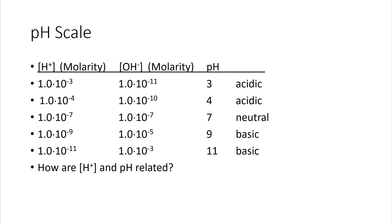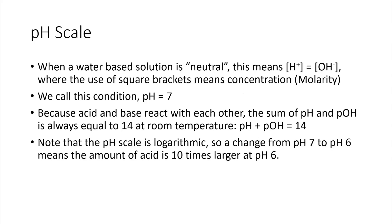How are the hydrogen ion and the pH related? pH scale: when a water-based solution is neutral, this means that the hydrogen ion concentration is equal to the hydroxide ion concentration, where the use of square brackets means the concentration is in units of molarity. We call this condition pH 7. Because acid and base react with each other, the sum of pH and pOH is always equal to 14 at room temperature: pH + pOH = 14.